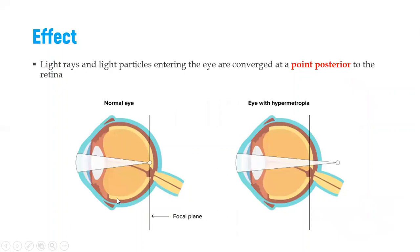So the effects of all these three possibilities is that the convergence of the light is at a point posterior to the retina, as you can see. Therefore, we know that if light converges behind the retina, we will not form an image.